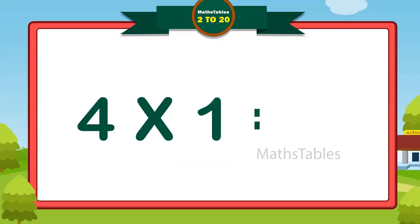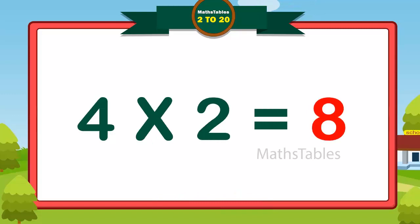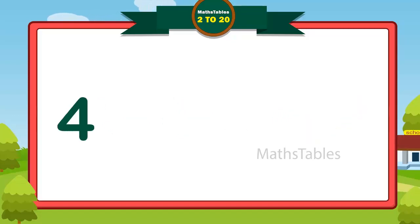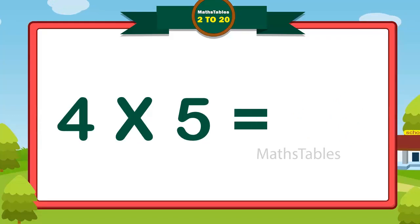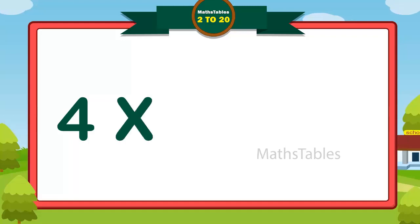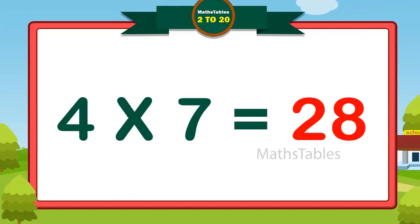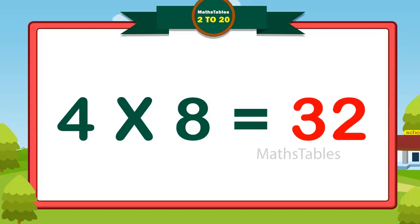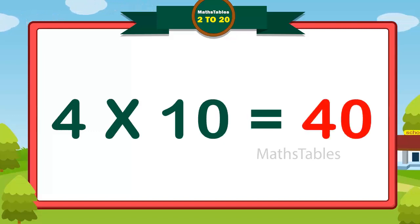4 ones are 4. 4 twos are 8. 4 threes are 12. 4 fours are 16. 4 fives are 20. 4 sixes are 24. 4 sevens are 28. 4 eights are 32. 4 nines are 36. 4 tens are 40.